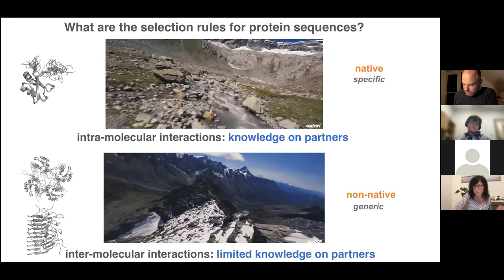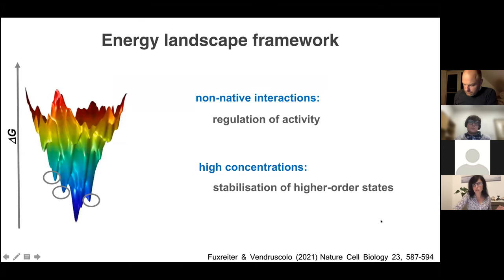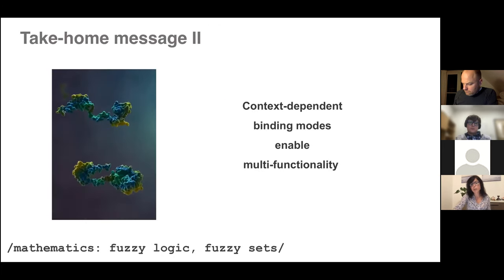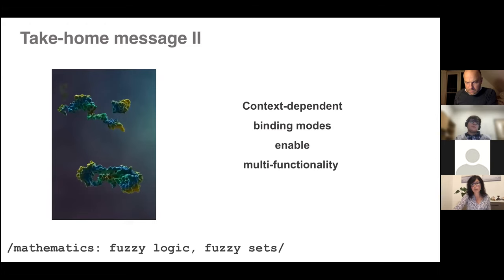Using the energy landscape framework, to be prepared for all these different cases, the protein keeps non-native interactions even in its native state. This was shown for myoglobin in the late 1960s—myoglobin has non-native states, mostly used for regulation of activity at low concentrations, but at high concentrations these are the interactions that stabilize higher-order structures. The second take-home message is that context-dependent binding modes exist for most proteins, irrespective of whether they are disordered or ordered, and they enable functionality.